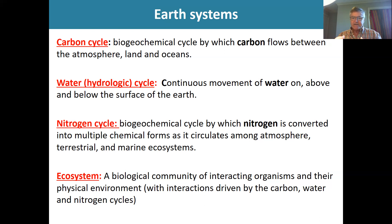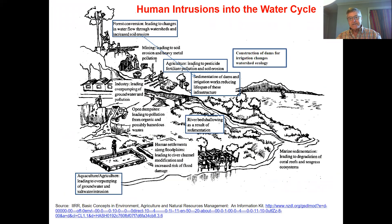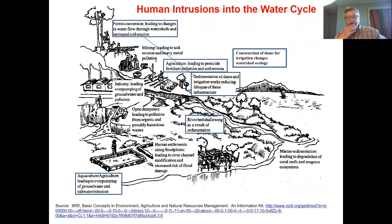We've also got ecosystems — we've talked about biodiversity. Here's a more formal definition: a biological community of interacting organisms — plants, animals, bacteria — and the environment in which they interact, driven by interactions with the water, carbon, and nitrogen cycles. Let's think about different ways that agriculture or other human use might affect these different cycles.